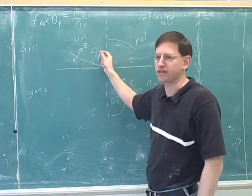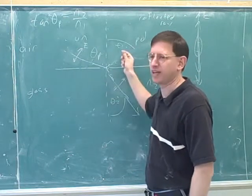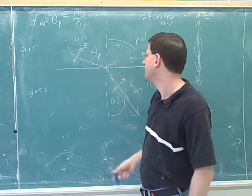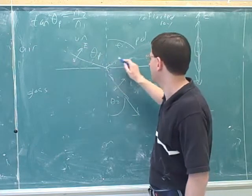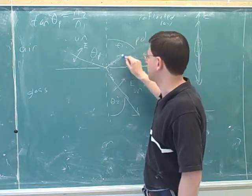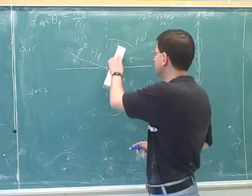Because we're assuming we're at the Brewster angle. If you're at the Brewster angle, of course, if we weren't at the Brewster angle, we would get something. But if we assume we're at the Brewster angle, this is the one type that you can't get. Because again, it would be oscillating parallel to the direction that the beam, the reflected beam, has to go.